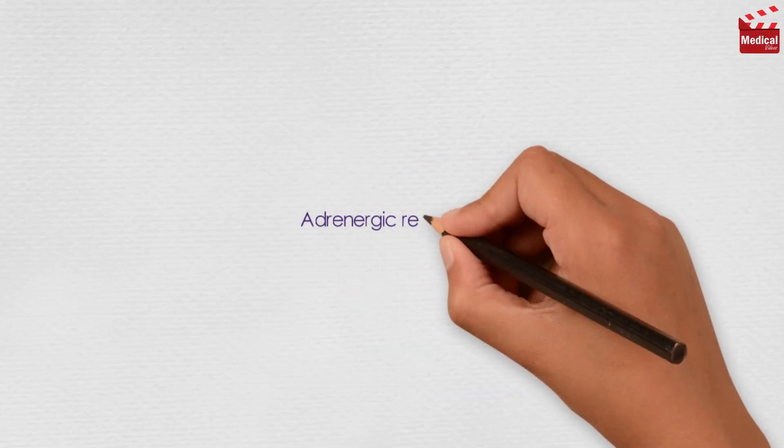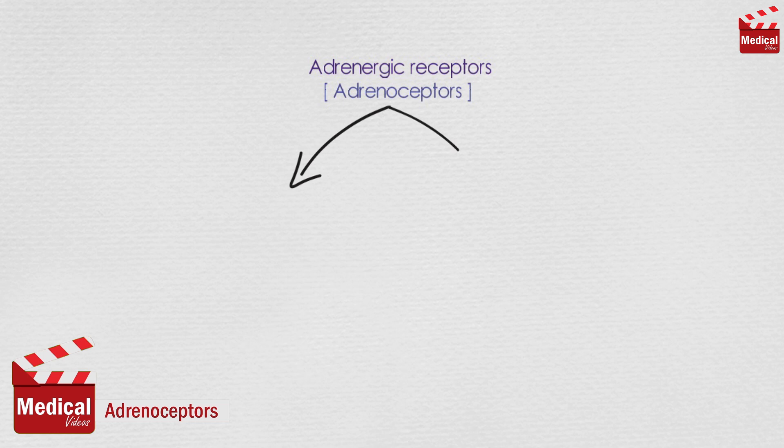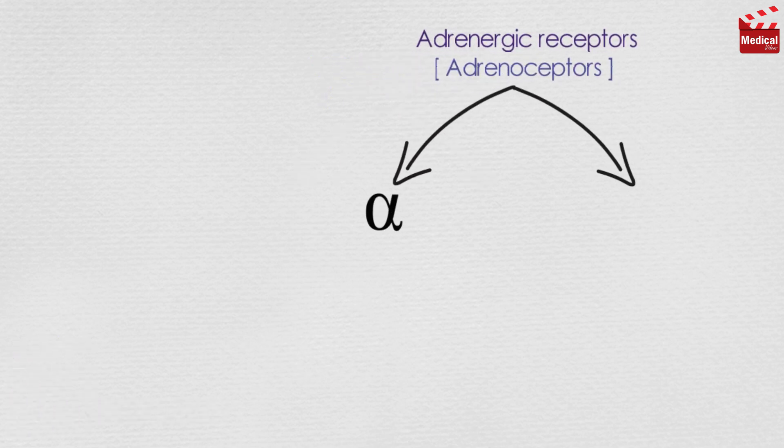In this lecture we'll discuss the adrenergic receptors, or also known as adrenoceptors. They are classified into two main families of receptors, alpha and beta receptors.